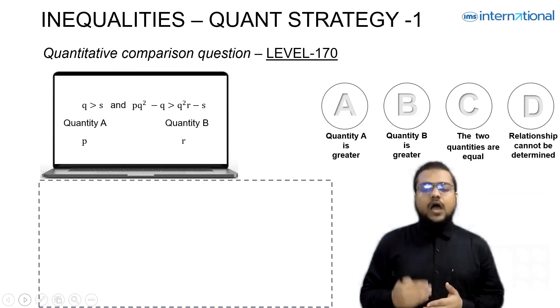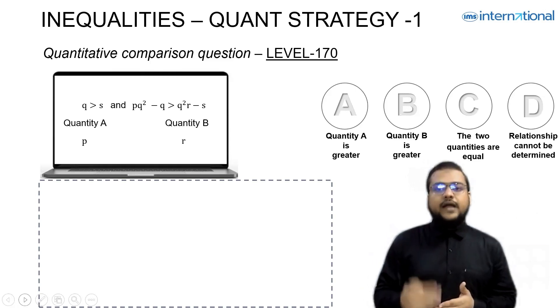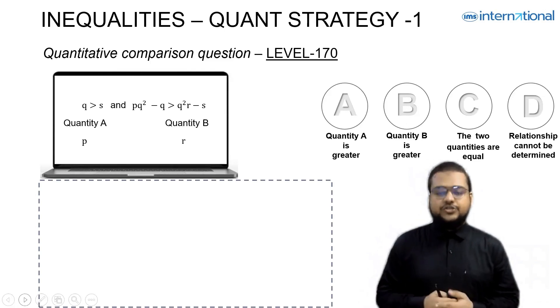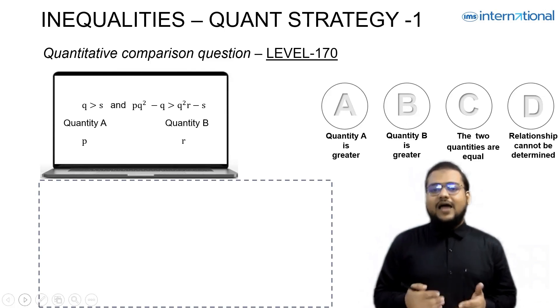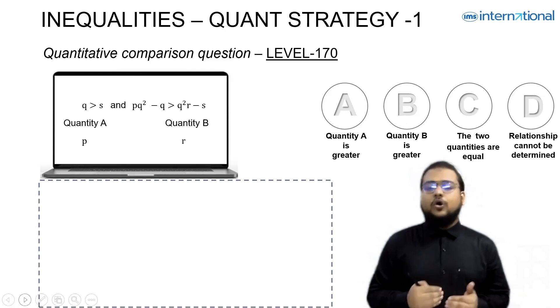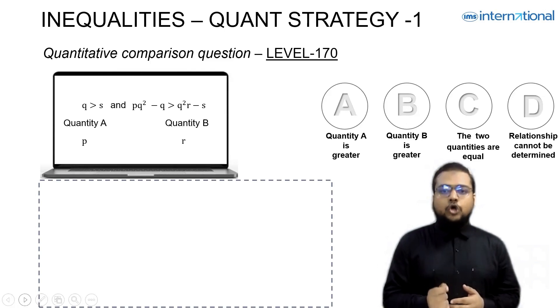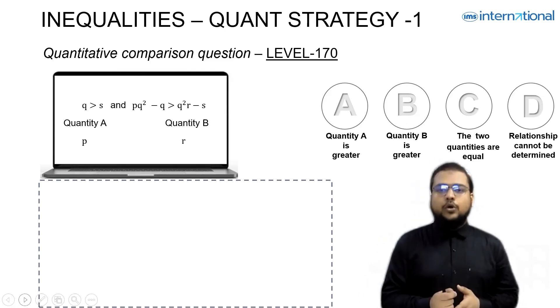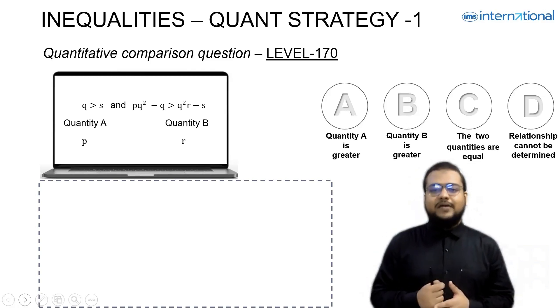Secondly, whatever you are thinking, you must be able to write that very clearly so that you don't mess up in any calculation or interpretation. As the question is already on my screen, the first step is always jot down the given inequalities on your scratch paper, write quantity A, write quantity B, and then start solving it.